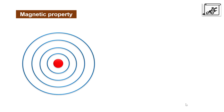Let's start with magnetic property. The magnetic property of any element is due to the presence of unpaired electrons. This unpaired electron revolves around its axis, and this motion is called spin motion. Due to spin motion it has a spin magnetic moment.